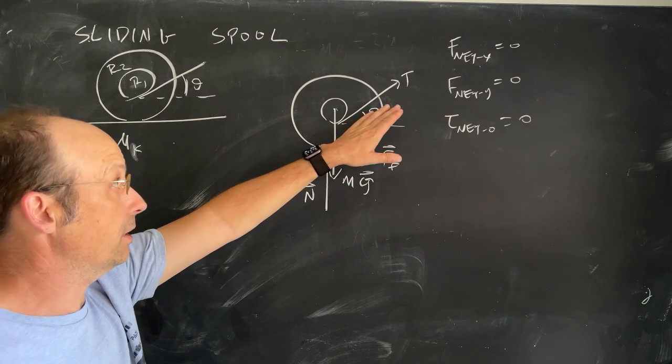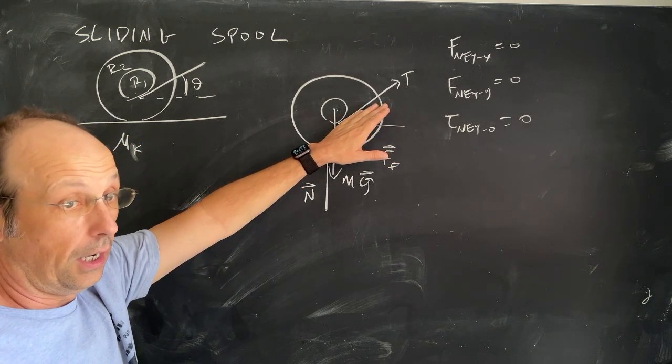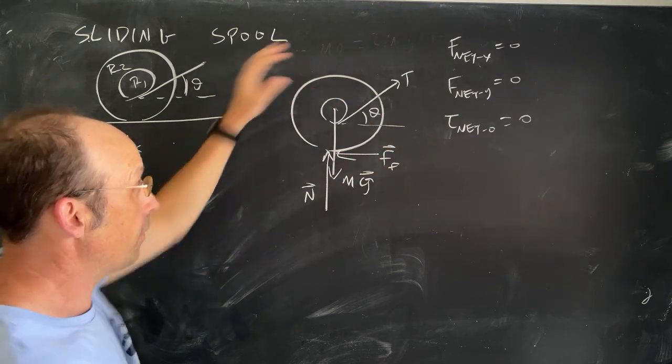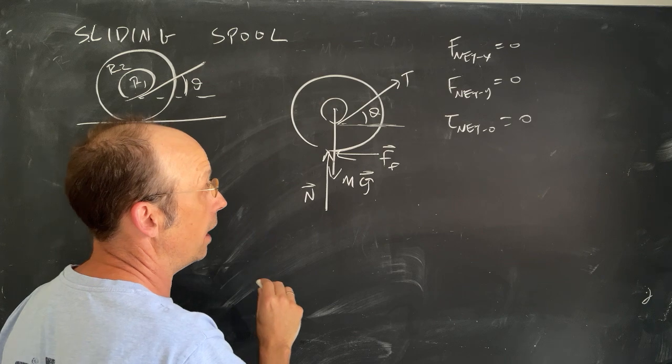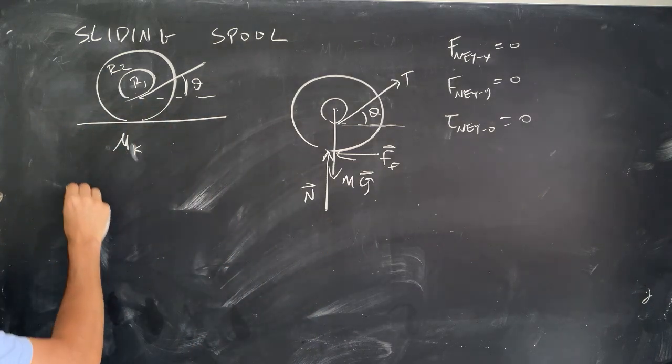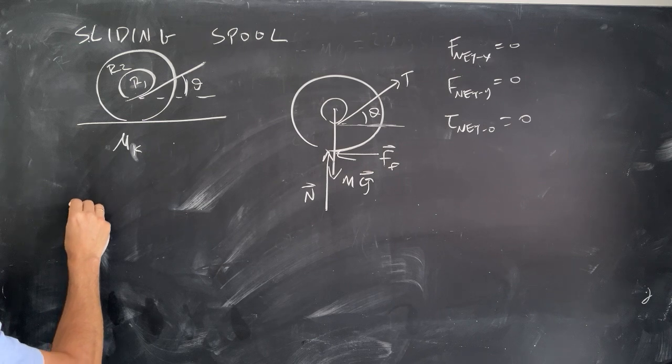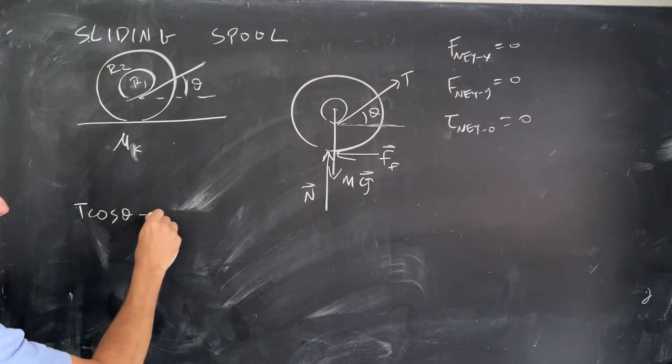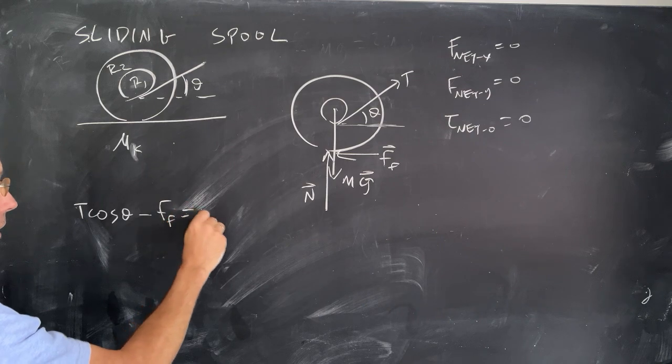So first, I'm going to start with the net forces in the x direction. I have two forces in the x direction. I have a component of the tension right here, T cosine theta, and then the frictional force. So I can put it over here, maybe. Maybe right here? T cosine theta minus the frictional force is equal to 0.